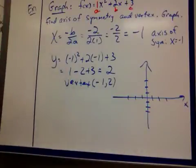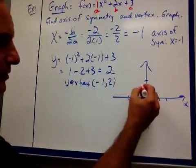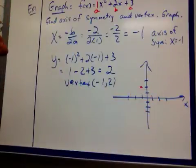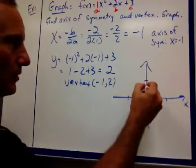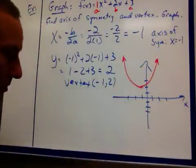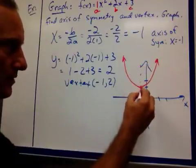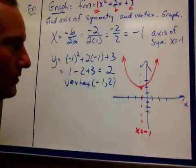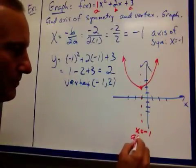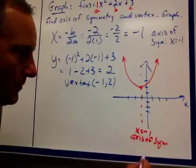So we're going to graph it. Now, we know that our a is positive. So, we know we're going to open up. Our vertex is at negative 1, 2 right there. And we're going to open up. You want to know your vertex. Your axis of symmetry is actually this line right here.